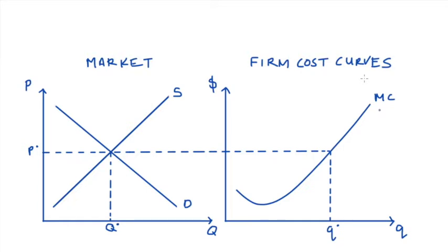Our firm in perfect competition is a price taker, so it takes the price that is determined in the market, that was P-star, and it sets the quantity that it produces, that's Q-star, such that price is equal to marginal cost.